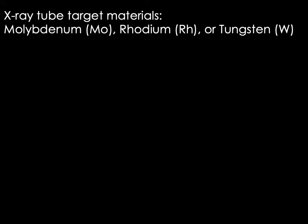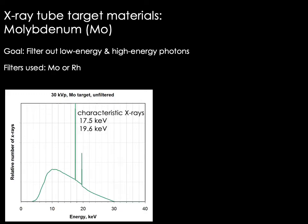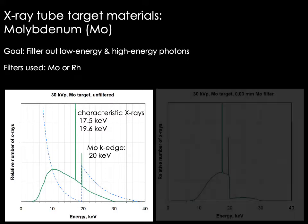The target or anode materials used in mammography are molybdenum, rhodium, and tungsten. For an unfiltered 30 kVp x-ray beam produced using a molybdenum target, characteristic x-rays are produced at 17.5 and 19.6 keV. As with other x-ray spectra, we want to filter out photons at the low and high ends of the spectrum. Molybdenum has a k edge of 20 keV, so a molybdenum filter absorbs many low-energy photons with decreasing absorption up to 20 keV, yielding a well-filtered x-ray beam.